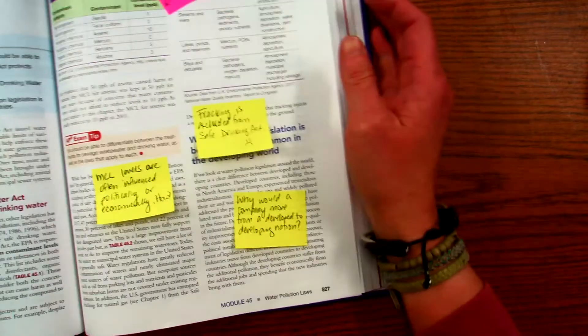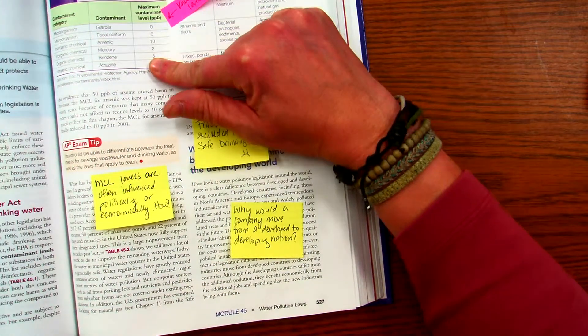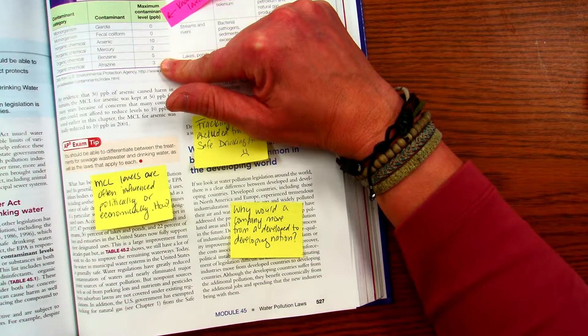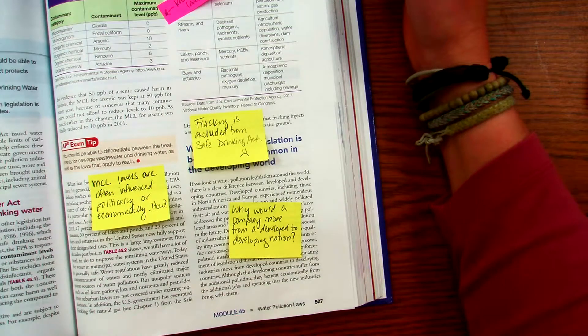And then moving over to 527, know these levels. So these different microorganisms, different contaminants, and know the levels that are required in the water. So we need to fall under those levels, so know what they are.